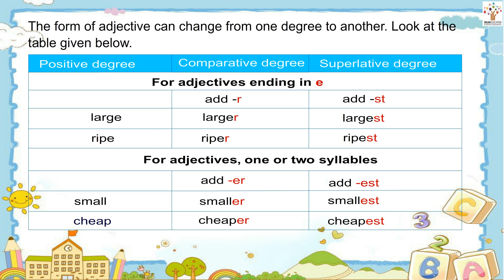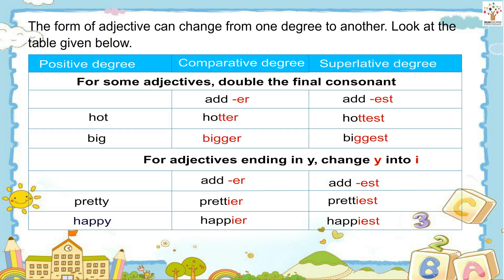For adjectives of one or two syllables — add ER, add EST. Examples: small, smaller, smallest; cheap, cheaper, cheapest.